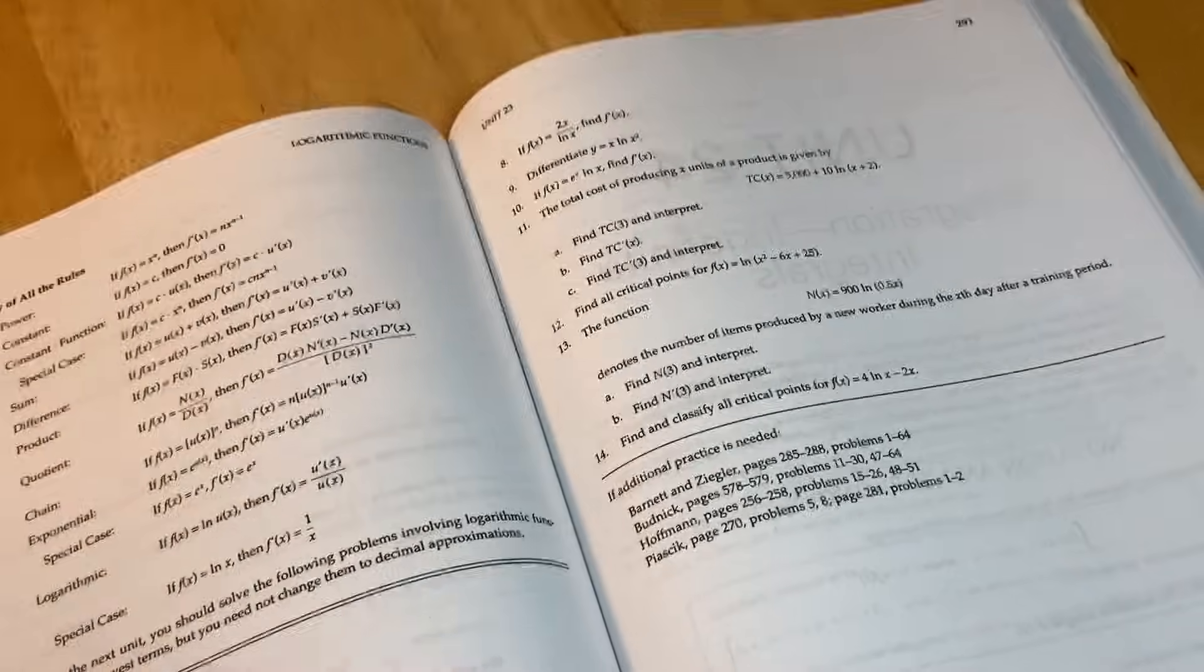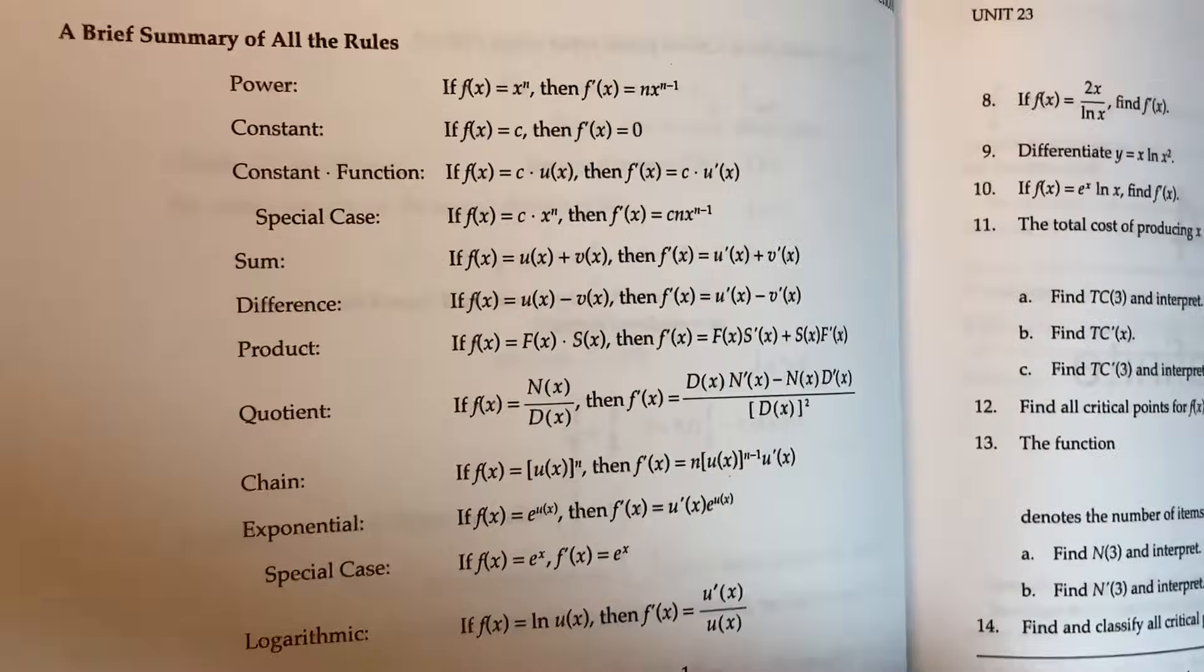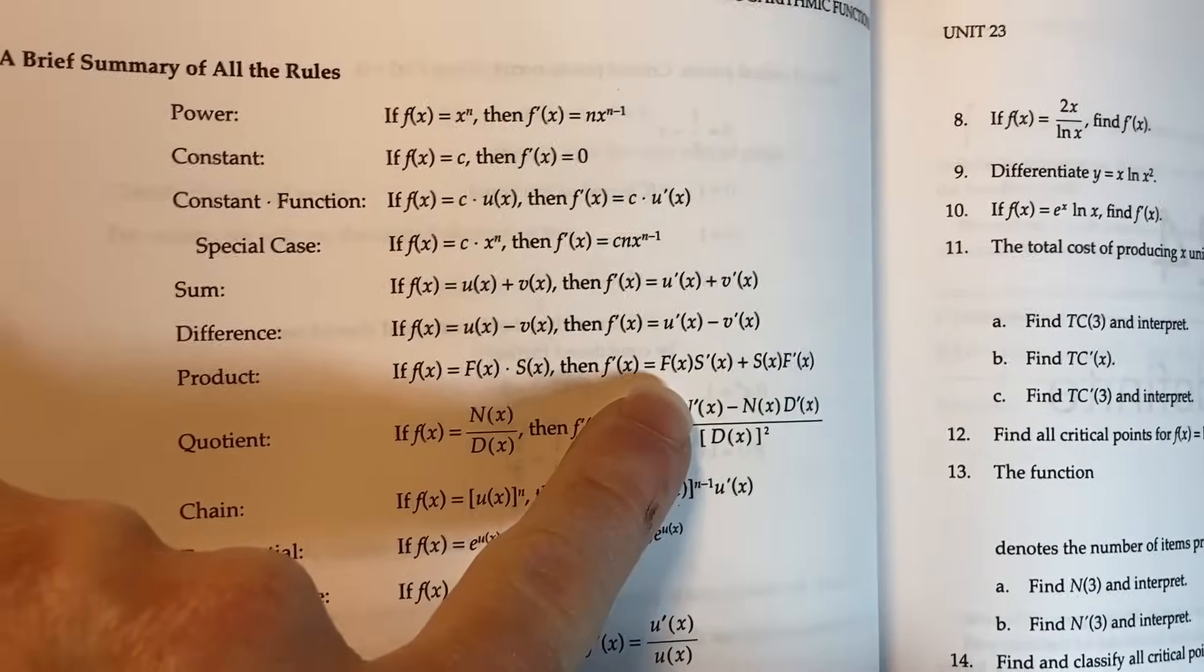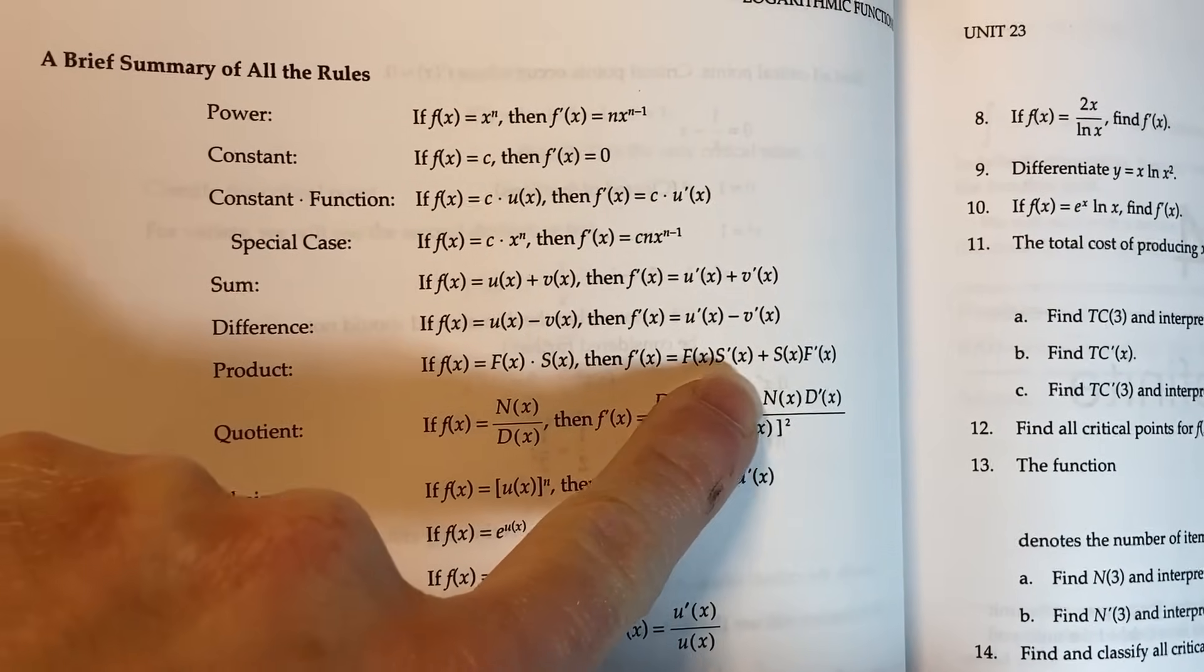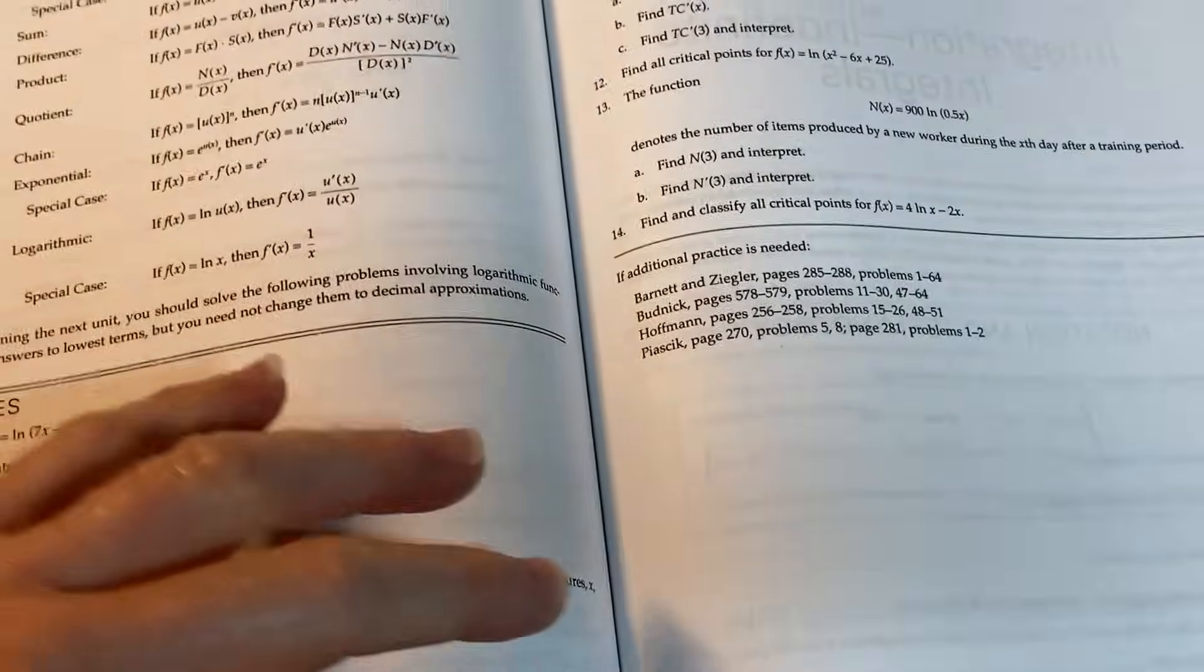Another thing I don't like about this book, and this is just me nitpicking here, is the way they do the product and quotient rule. A lot of textbooks do it this way. I explain it slightly differently. So like I would have the S prime before the F, little stuff like that and how they make the substitutions. So it's not a perfect book, but it's a good one. And I recommend it.